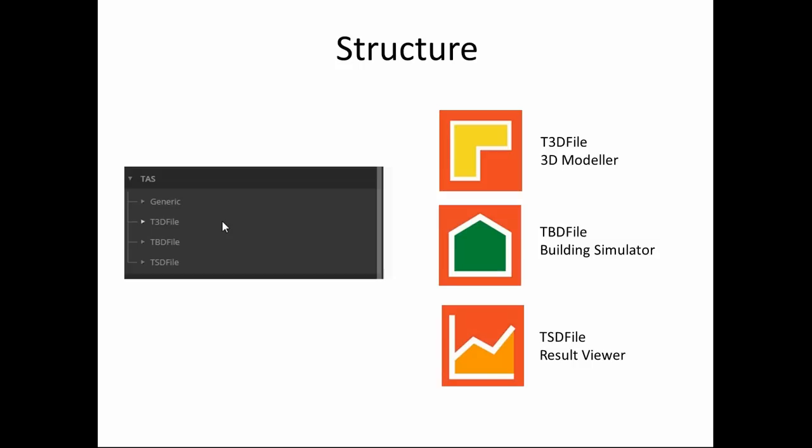Structure is very simple. We have the TAS or Tasmanian Devil, let's see how this will end up. And we have the three subfolders. T3D which is 3D modeler, TBD file which is building simulator is the place where we set up all internal condition assumption, and then once we start the simulation we have TSD file which is result viewer. The first file is just used for the 3D geometry and export for shading.